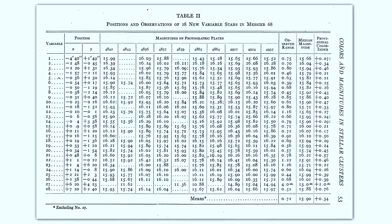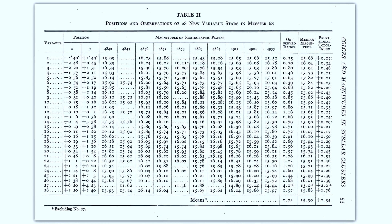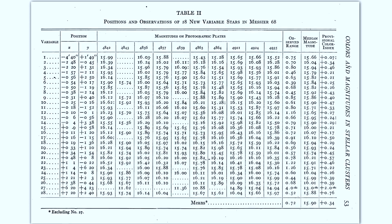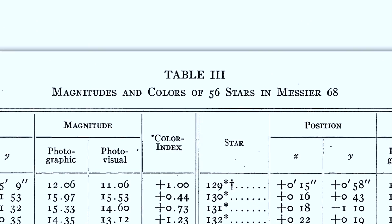He used three different methods on these globular clusters to figure out their distances. The first one, which was the technique that had been around the longest, was just to look at how big they appeared to be. If you assume they were all intrinsically the same size, then if you see a big globular cluster, it's got to be close to you, and if you see a very small one, it's got to be a long way away.